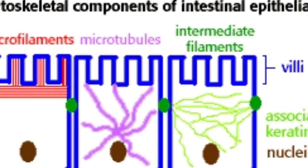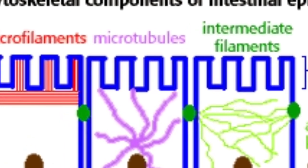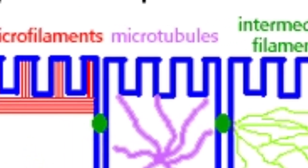Cell structure is supported with the help of the cytoskeleton, which provides shape and structural support to the cell.